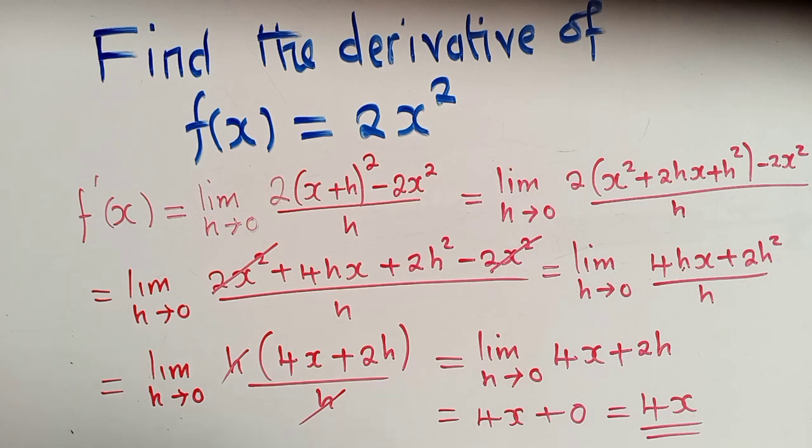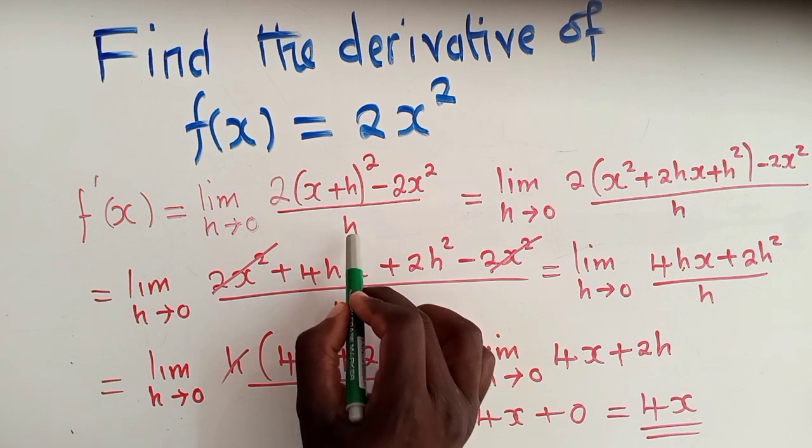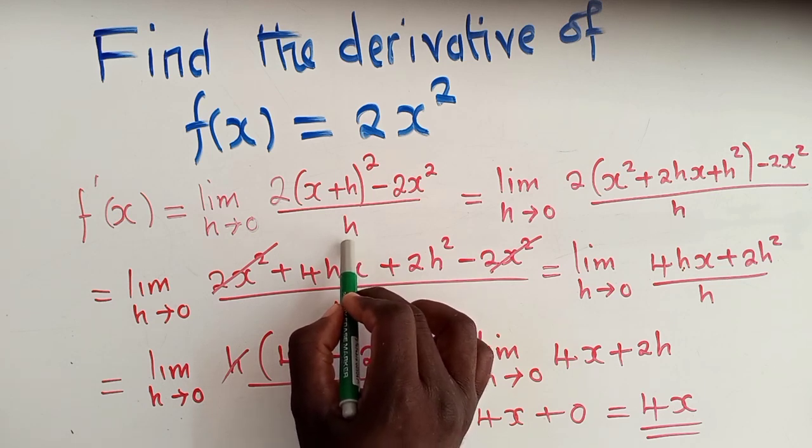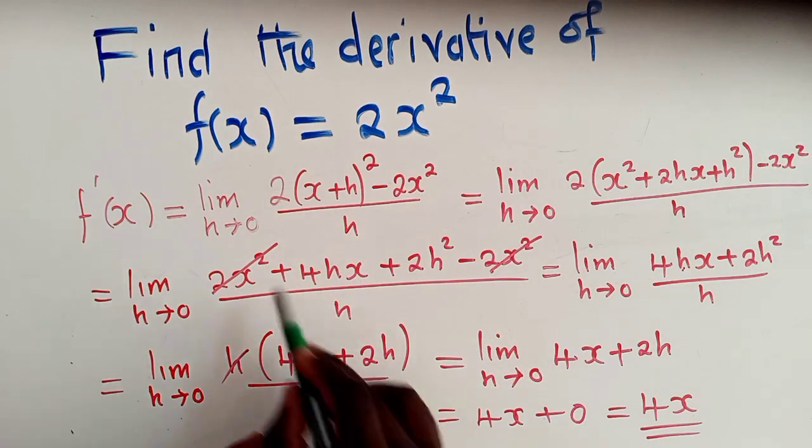It's because we want to cancel this h, which is a denominator. Because when we substitute h here, the denominator will be a 0. And mathematically, it's wrong. We can't have a 0 as a denominator. So we need to do all these steps such that we come and cancel here and remain without h as a denominator here. And after that, that's when we substitute a 0.